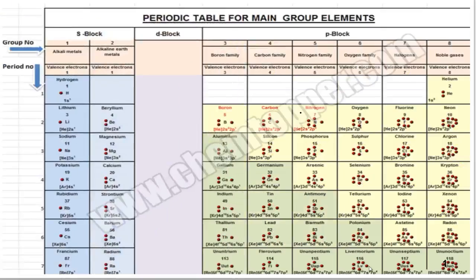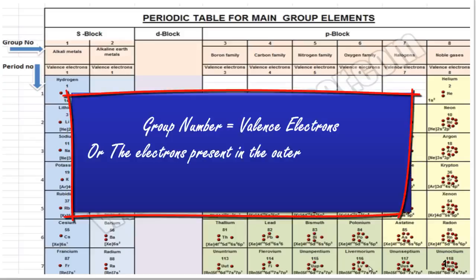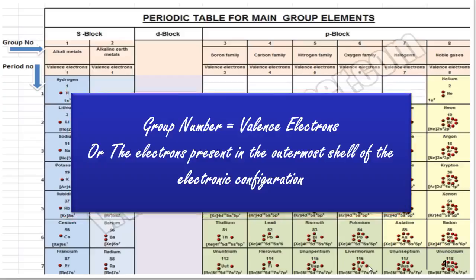It is very important to know about valence electrons before starting to make Lewis dot symbols. Valence electrons, as we have discussed earlier, can be predicted with the help of the group number, or you can use electronic configuration to know about valence electrons. These are the electrons which are present in the outermost shell of the electronic configuration.